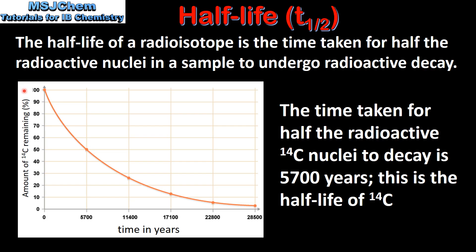In this graph we can see how the amount of the radioisotope carbon-14 in a sample changes over time. The time taken for 50% of the carbon-14 nuclei to decay is 5700 years. This is the half-life of carbon-14.